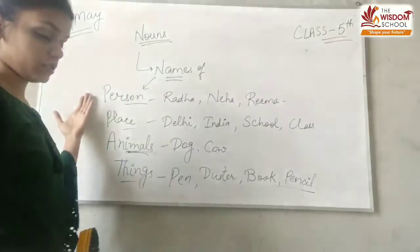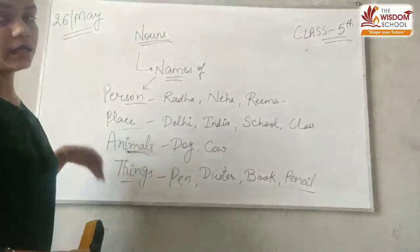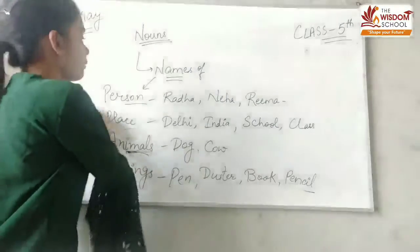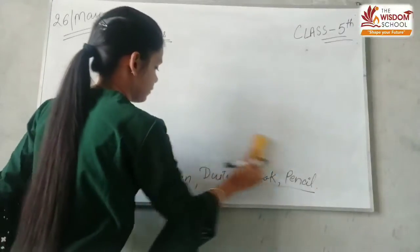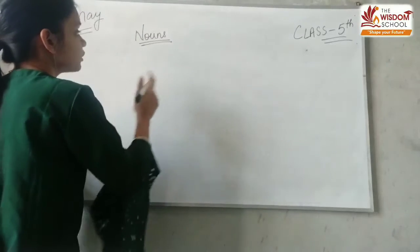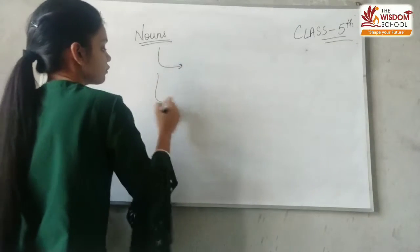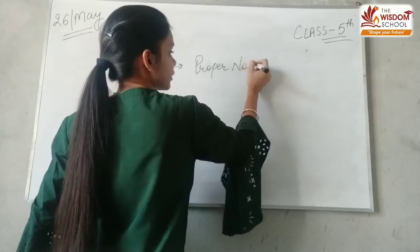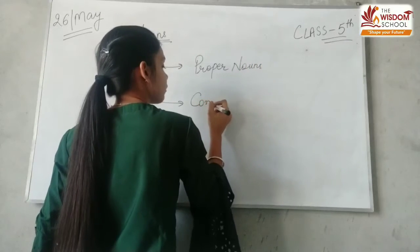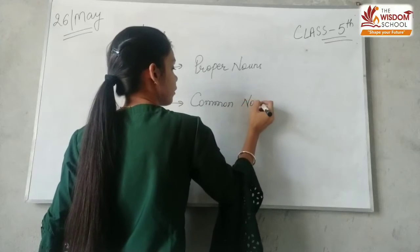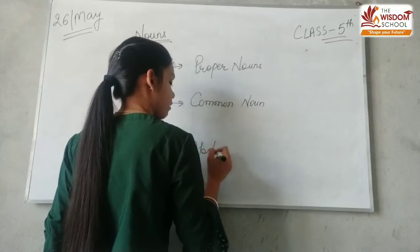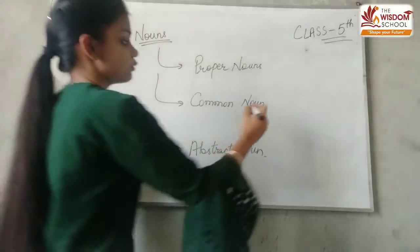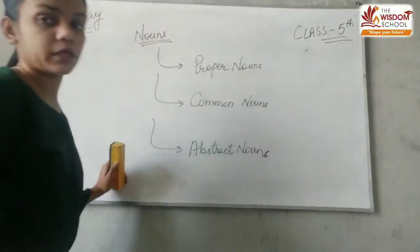So basically, nouns are the names of person, place, animals, and things. Clear? Ab nouns kya hote hain, yeh pata chala. Ab hum padhenge nouns ki types. We have done before that there are three types of nouns. Pehle humne kitne types padhe the? Three types padhe the: proper noun, common noun, and abstract noun.